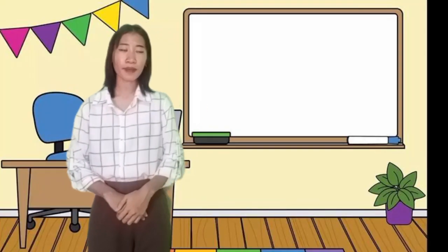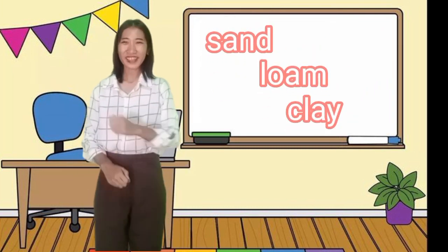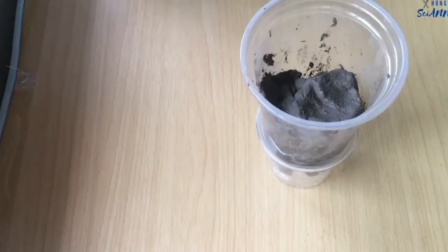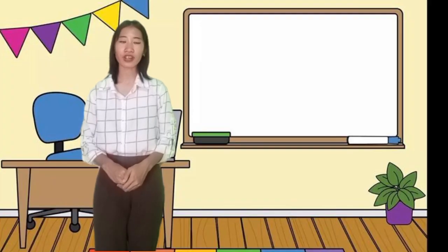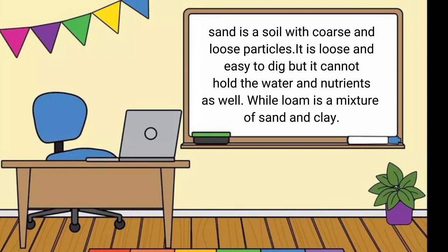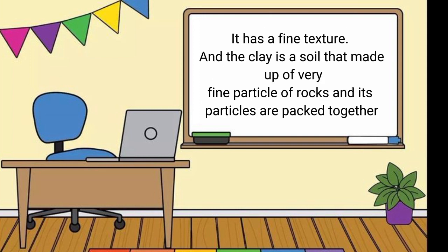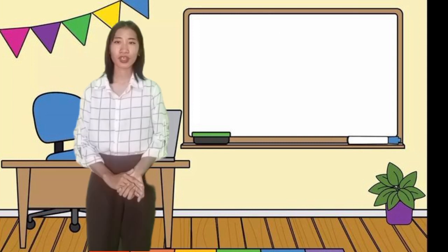Class, what are the three types of soil? Teacher, the three types of soil are sand, loam, and clay. Great! I have here some samples of soil. What can you notice about the characteristics of each type? Teacher, the characteristics of sand are coarse and loose particles — it is easy to dig but cannot hold water and nutrients well. Loam is a mixture of sand and clay with a fine texture. Clay is made up of very fine particles of rocks with particles packed together tightly.